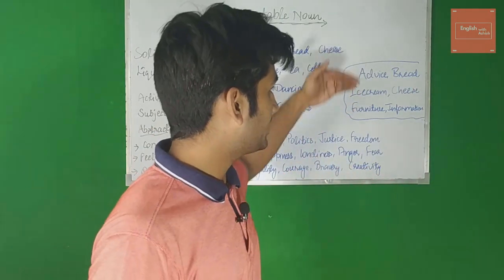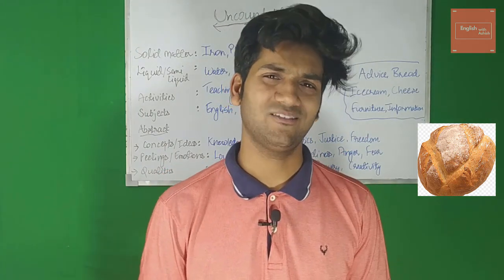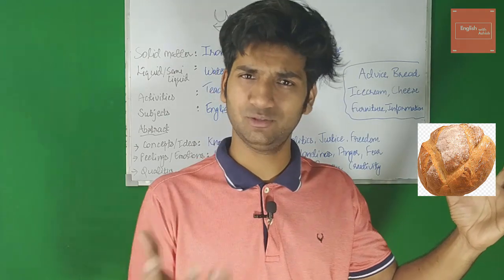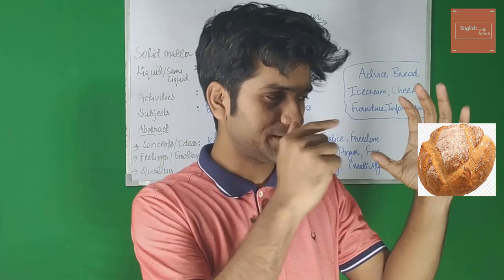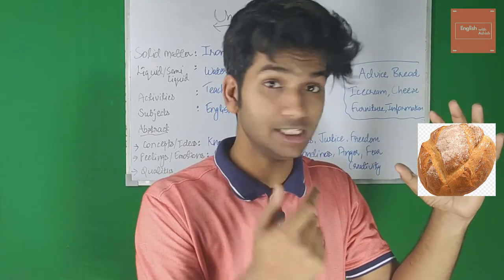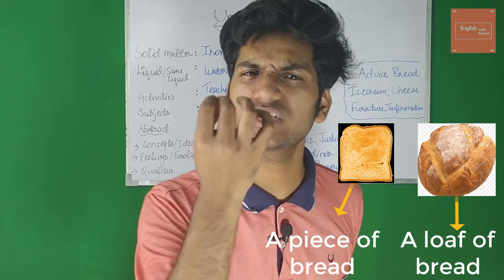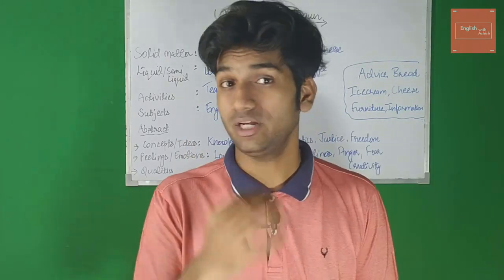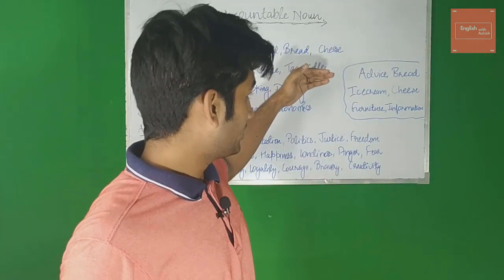The second word is 'bread'. You might say bread is countable — we can count it. But no, bread is a material. We use the word 'bread' in two ways: when you refer to bread as a substance or material, you cannot count it. You can count a loaf of bread, you can count a packet of bread, but you cannot count the material — the substance bread. So it's always uncountable.